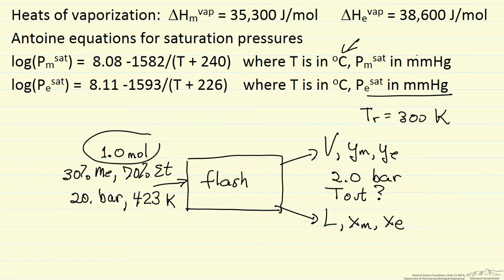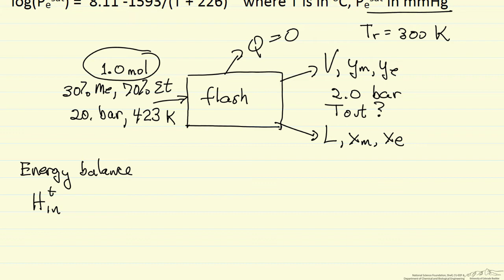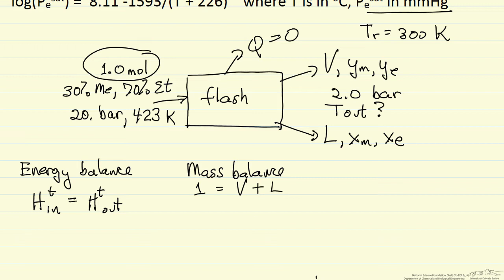We take one mole of feed, so V is the moles of vapor and L is the moles of liquid. We have to have these two phases — liquid and vapor — in equilibrium. We're going to need an energy balance, where Q equals zero since no heat is removed from the system. We also need mass balances: we're feeding one mole, and it leaves either as vapor or liquid, so they must add to one.